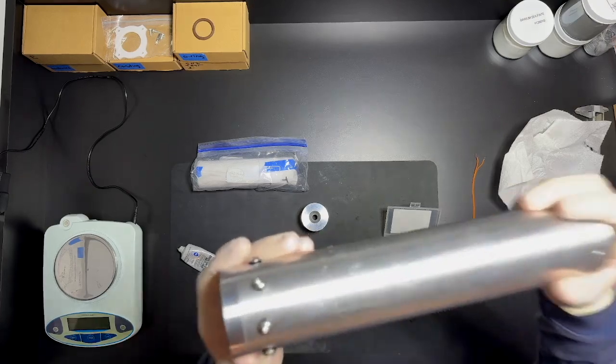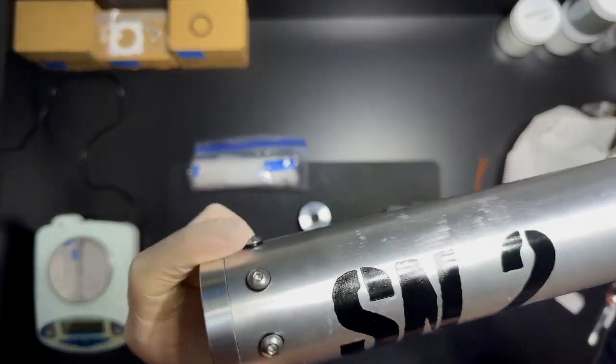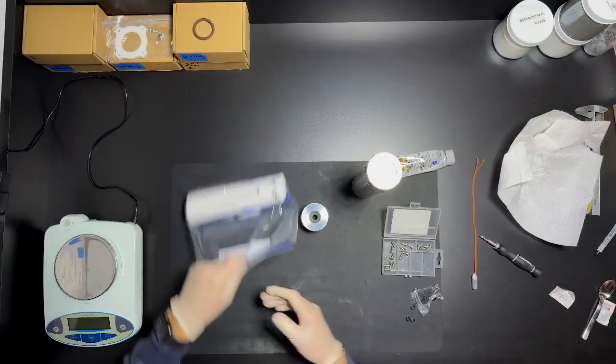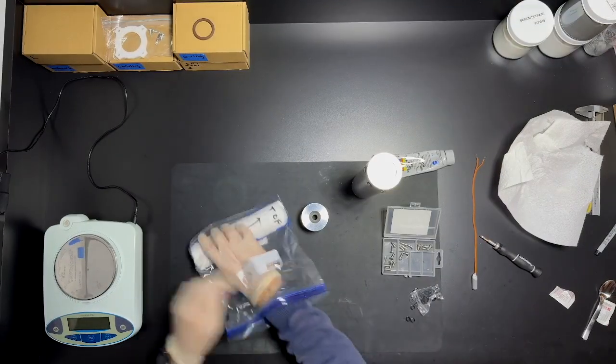And then here's how it looks once they're all screwed in. Once the forward closure is on, it's time to add the propellant.